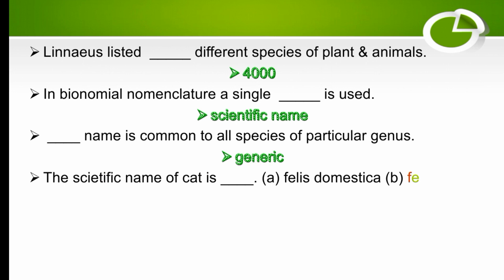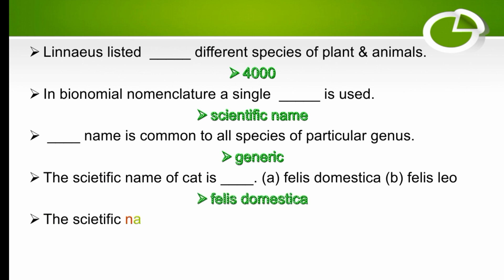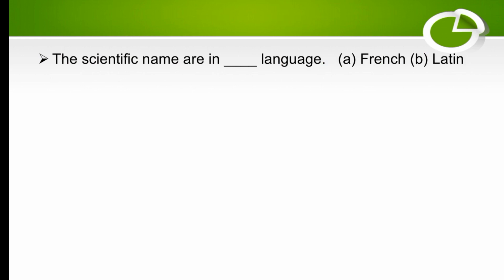The scientific name of a cat is Felis domestica — the right option is Felis domestica. The scientific name of a tiger is Felis tigris. All scientific names are in Latin language — the right option is Latin.